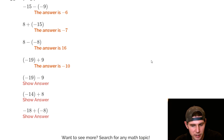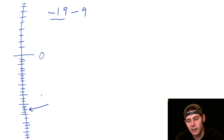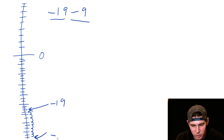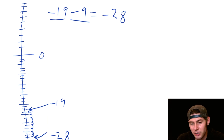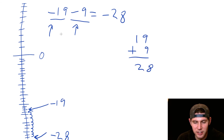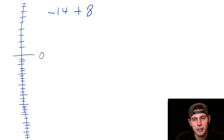Next: negative nineteen minus nine. We start at negative nineteen and go down nine more: one through nine. Counting all those gives negative twenty-eight. The alternate approach: both are negative so they work together — nineteen plus nine is twenty-eight — and since both are negative they're digging deeper, so the answer is negative twenty-eight.